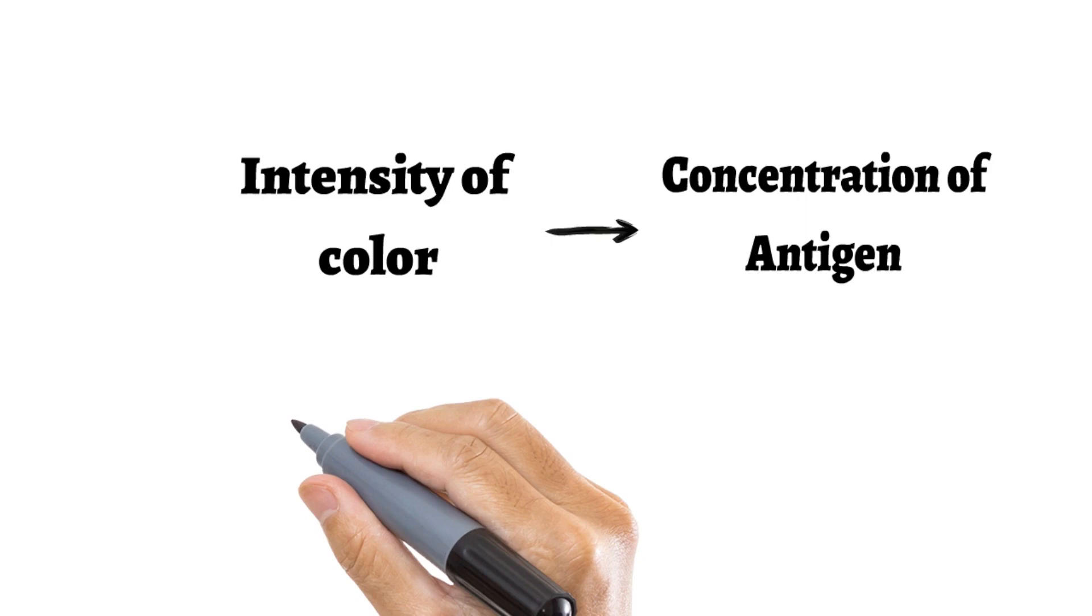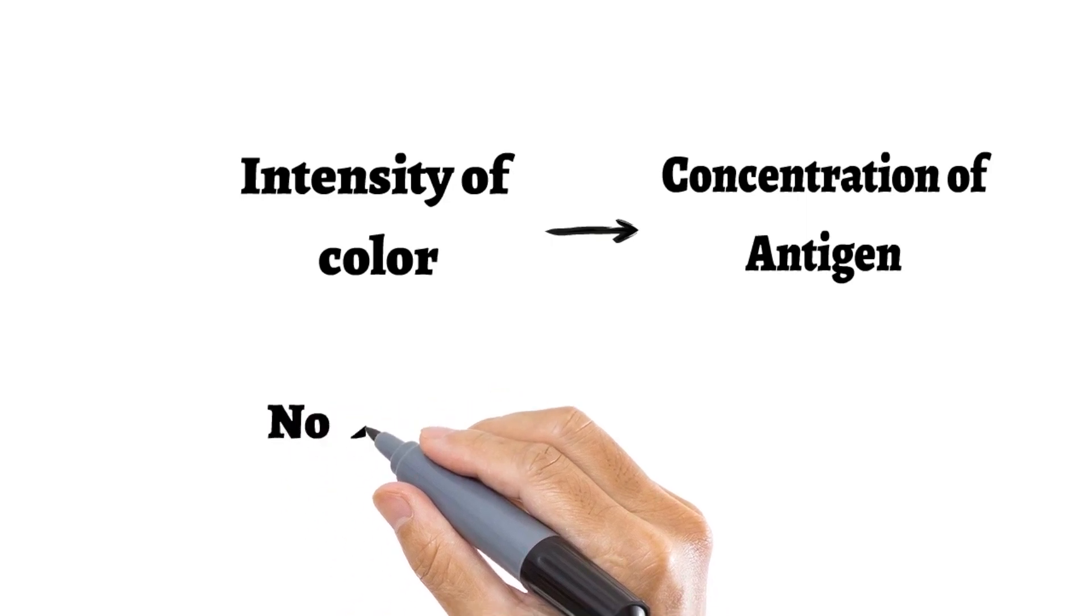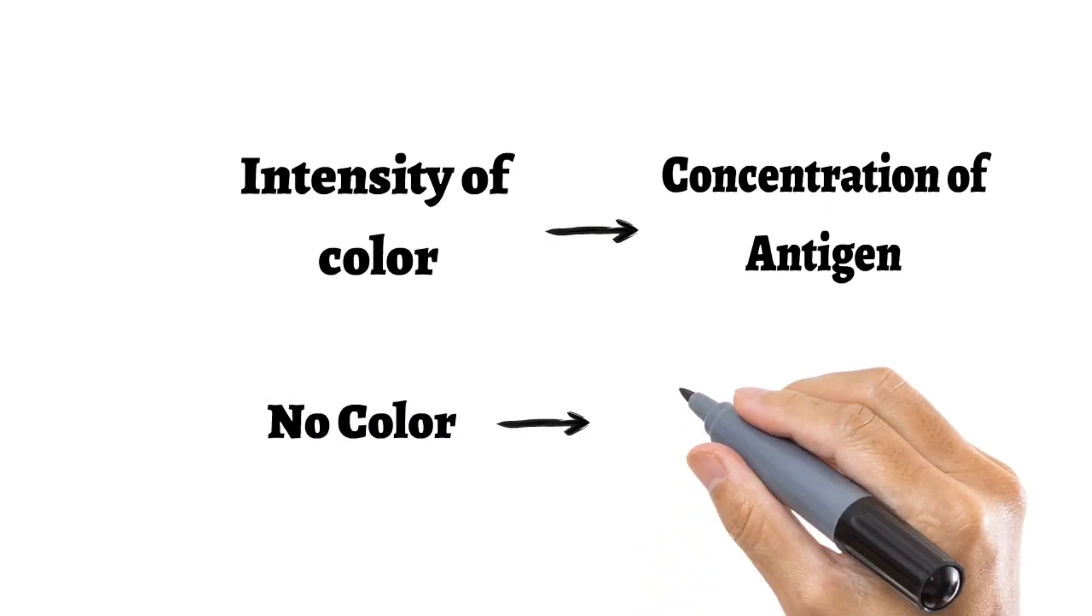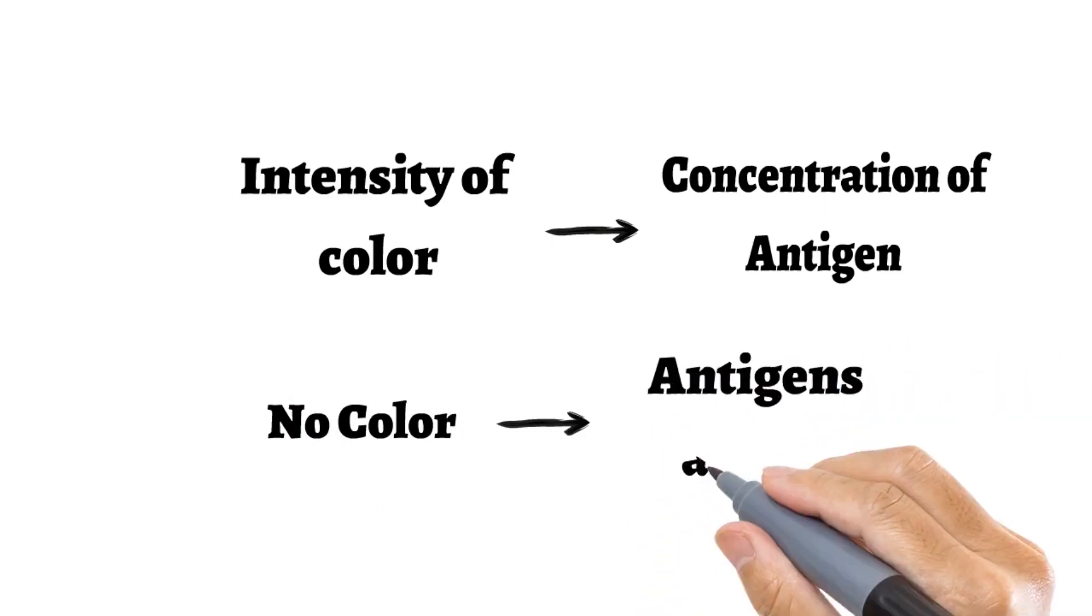But what if color is not developed? This means the antigen is not present in the sample. So in this case, if color does not appear, it means the A antigen is absent in your sample.